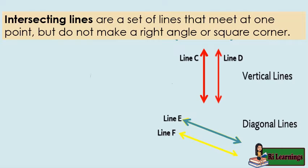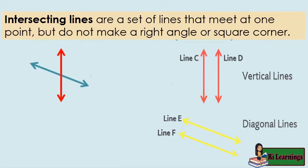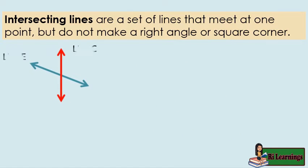Intersecting lines are a set of lines that meet at one point but do not make a right angle or square corner. This is the symbol used to indicate intersecting lines. Take a look at line C, a vertical line, and line E, a diagonal line.